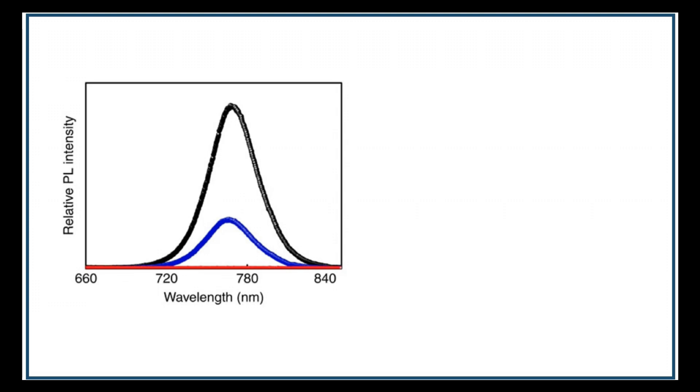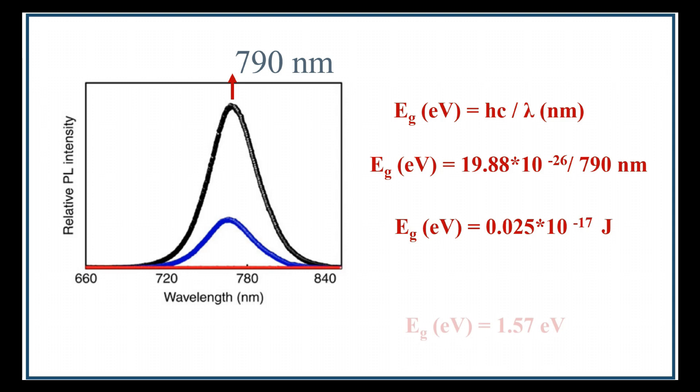Let us check with an example. This is a PL spectra of a material called perovskite. The PL maximum is at 790 nanometers. Now based on the equation Eg equals hc divided by lambda, we can calculate the bandgap of the perovskite material by substituting all the values in this equation. The resultant bandgap is 1.57 electron volts, which is true based on the literature.